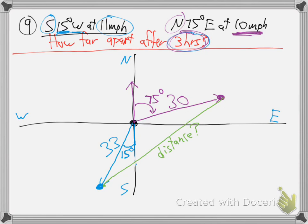How would you know it's law of cosines, not law of sines? Jose: there are no matching pairs — no complete set. Exactly — the Jose theorem. Also, the Pythagorean theorem only works for right triangles; this angle is 120, not 90, so we can't use A squared plus B squared equals C squared. We need law of cosines.